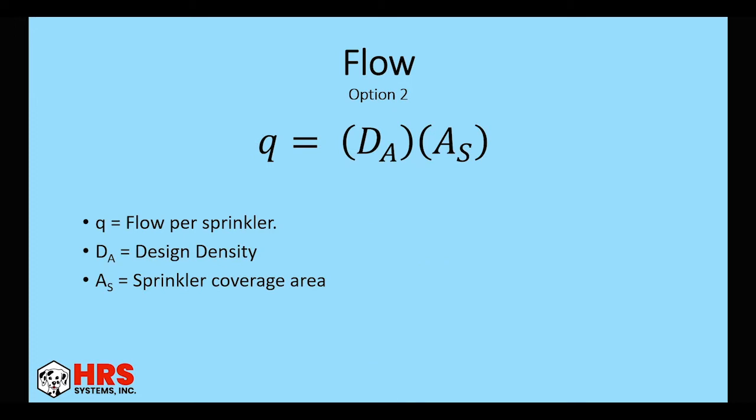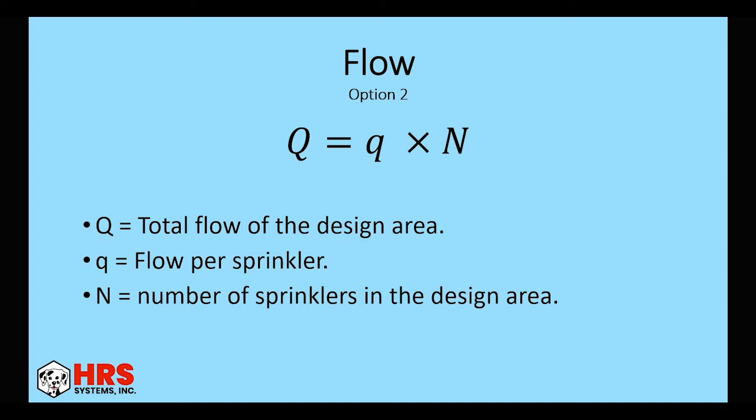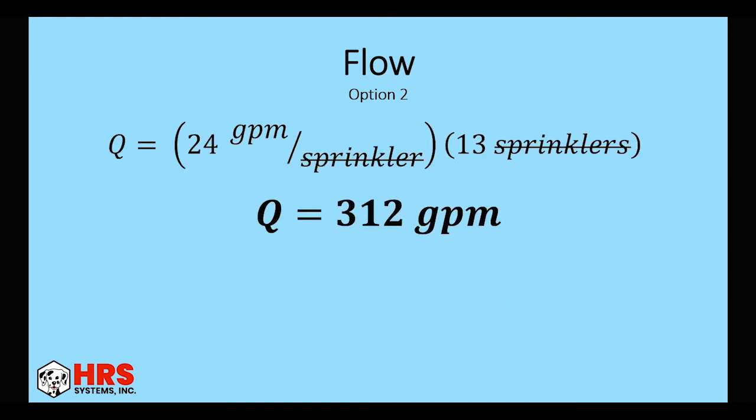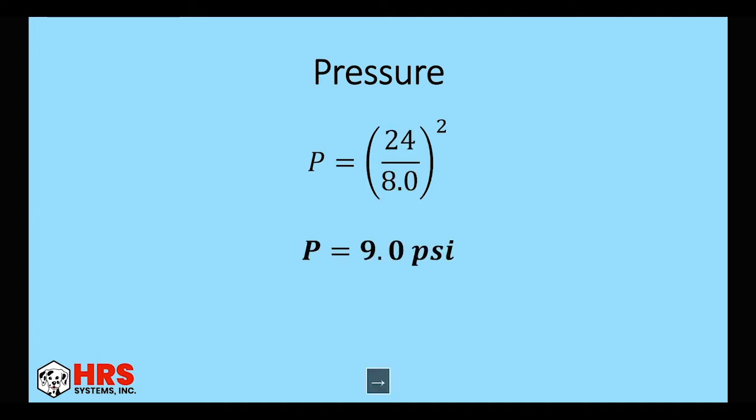The other way to do this is to get the individual flow per sprinkler. So that's the design density over the coverage area. So 0.2 times the 120 square feet gives us 24 GPM. And we know how many sprinklers we have. So we can multiply that flow times the number of sprinklers to get the overall flow. So 24 GPM times 13 sprinklers, 312. So that gives us a little bit better estimate. It's going to be higher as well. Obviously, not much higher. But to me, it just gives me a better estimate. It makes me feel a little bit better inside.